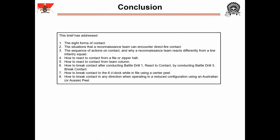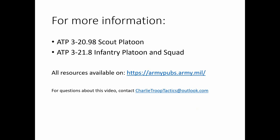In this presentation, we have addressed the eight forms of contact, the situations a reconnaissance team can encounter direct fire contact, the sequence of actions on contact, and why a reconnaissance team reacts differently from a line infantry squad. We covered how to react to contact from a file or zipper halt, from team column, how to break contact after conducting Battle Drill 1 by conducting Battle Drill 3, how to break contact to the 6 o'clock while in file using a center peel, and how to break contact in any direction when operating in a reduced configuration using an Australian or Aussie peel. The following resources were used in preparing this presentation. Send any questions or comments to charlietrooptactics at outlook.com.